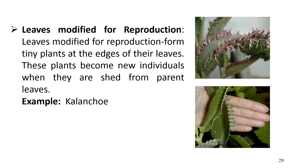Some leaves are modified for reproduction. Typically, leaves have limited growth — they grow, function, and then die without sustaining new growth. Leaves modified for reproduction form tiny plants at the edge of their leaves; these become new individuals when shed from the parent leaf. An example is Kalanchoe, which is a dicotyledonous flowering plant. This concludes our discussion of leaf morphology, anatomy, and the different types of modified leaves.